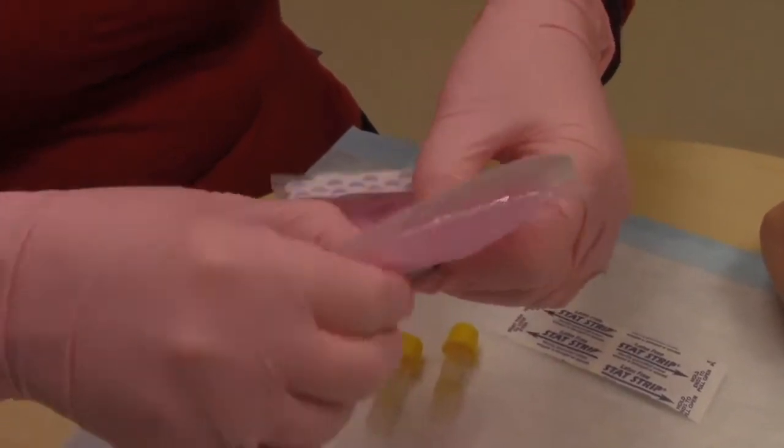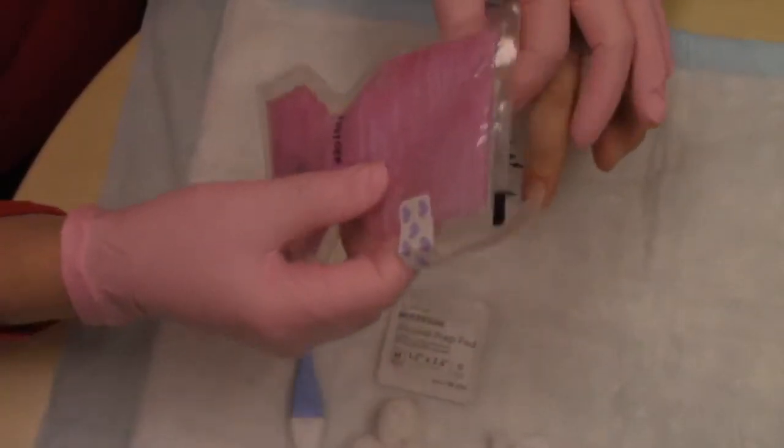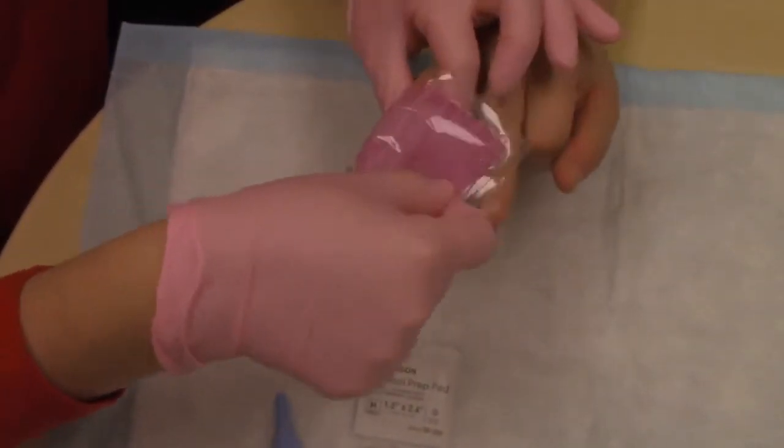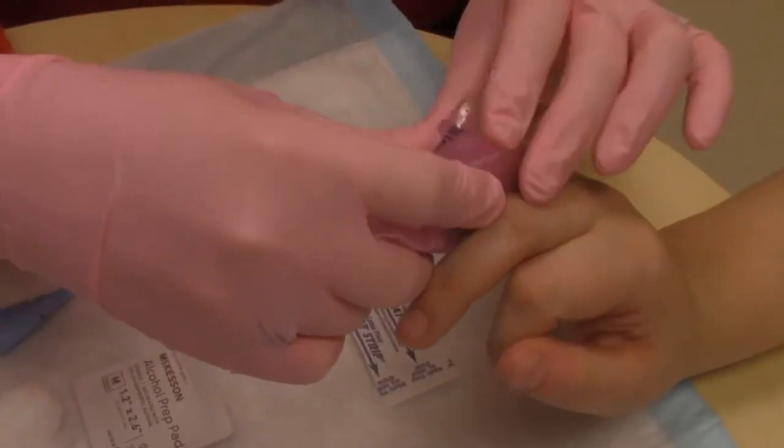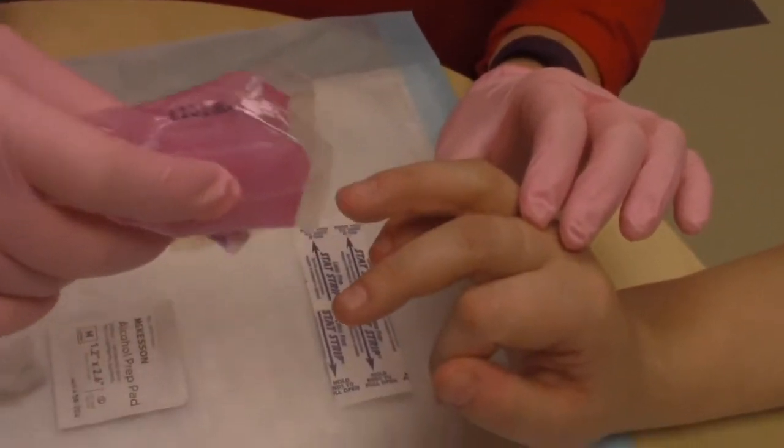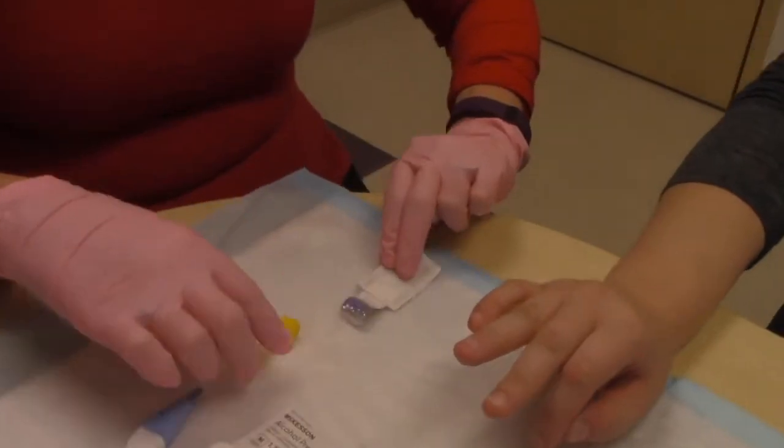Activate the warm pack and place it on the fingertip. Hold the warm pack on the fingertip for one to two minutes. Once the fingertip is warm, open the alcohol swab and clean the fingertip.